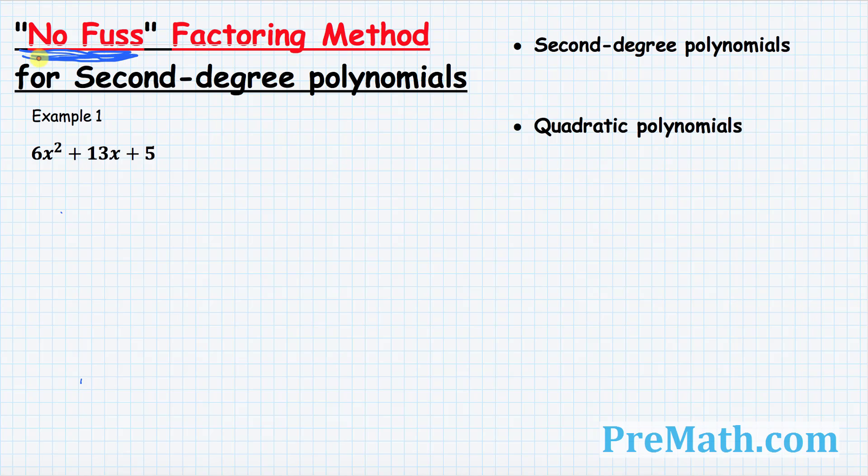One more thing to keep in mind that second degree polynomials are also called quadratic polynomials. They are essentially the same thing. They are synonymous. So let's go ahead and get started with our example and find the factors using no fuss factoring method.